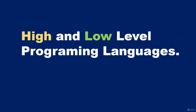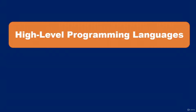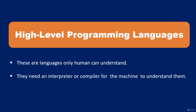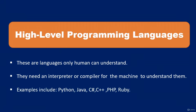In this video, I will introduce you to high and low level programming languages. High level programming languages are languages that only humans can understand — computers can't understand them unless they are compiled or interpreted. They need an interpreter or a compiler for the machine to understand what the program is trying to get it to do. Examples of high level programming languages include Python, Java, C#, C++, PHP, and Ruby.